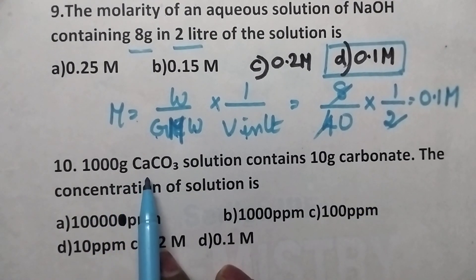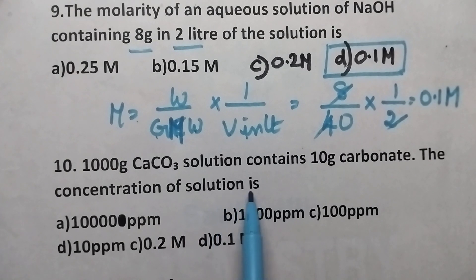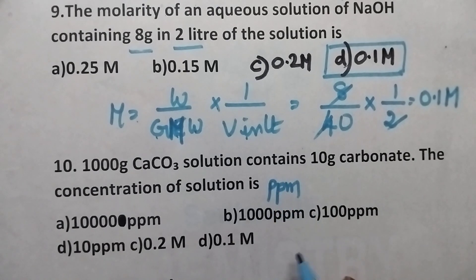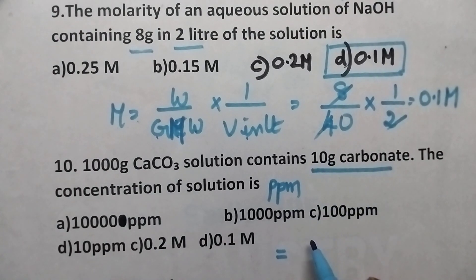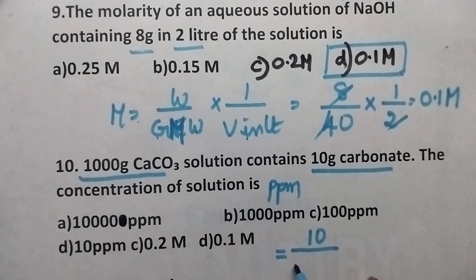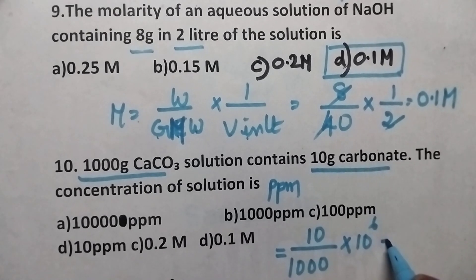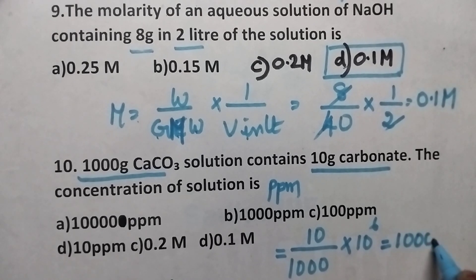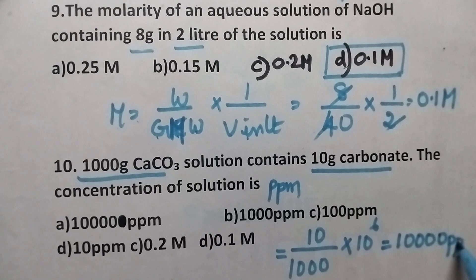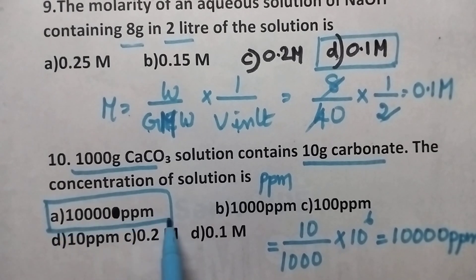1000 grams of calcium carbonate solution contains 10 grams of carbonate. The concentration of the solution is? Here we have to calculate the concentration in terms of PPM. We consider the weight of the substance, that is 10, divided by the weight of the solution, that is 1000 grams, into 10 to the power 6. That will be equal to 10,000 PPM. So option A, 10,000 PPM, is the right option.